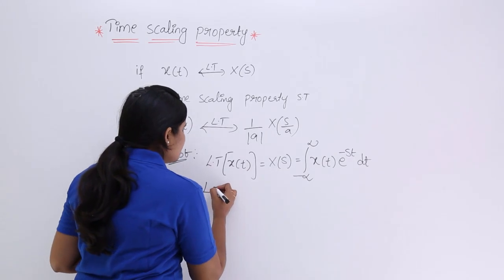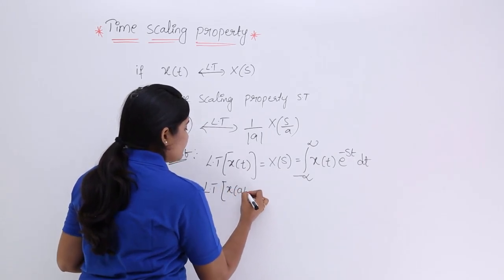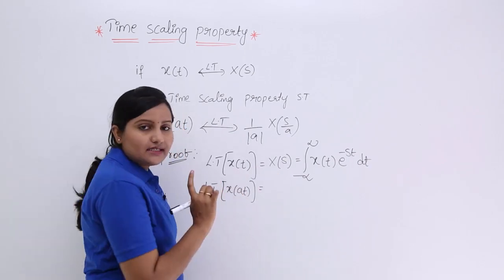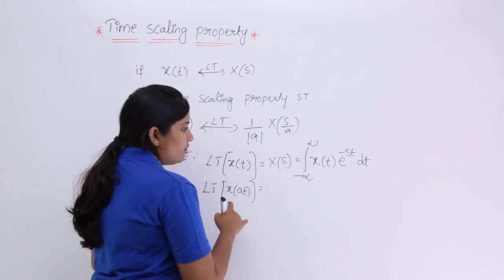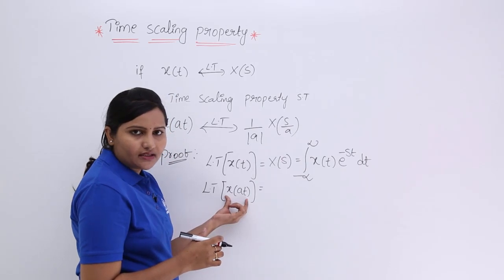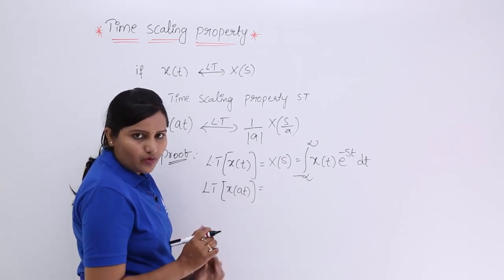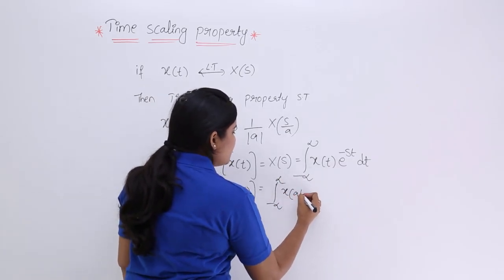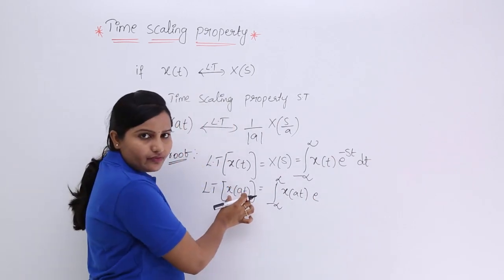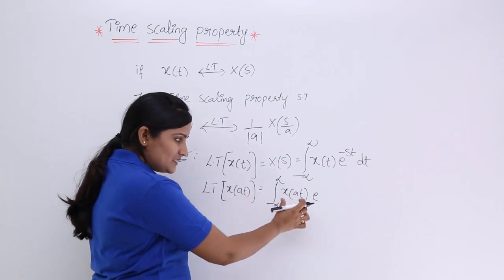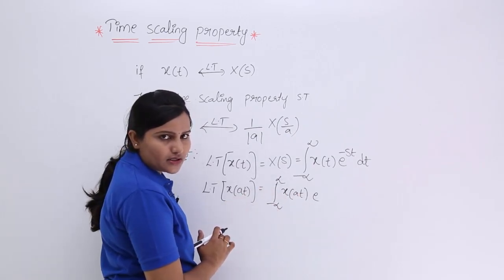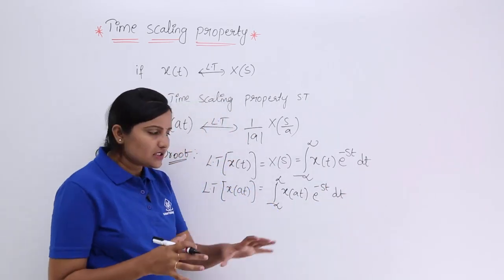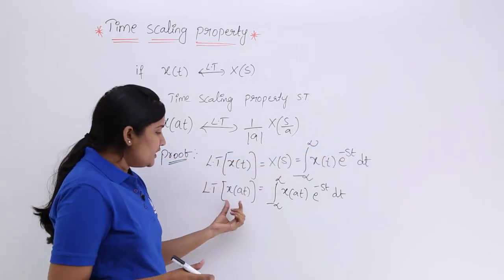We do not want the Laplace transform of x(t); we need to prove the Laplace transform of x(at). So I am going to consider the Laplace transform of x(at) — the time-scaled version of x(t). In the standard equation, wherever x(t) appears, replace it with x(at). So the equation becomes the integral from minus infinity to infinity of x(at) · e^(−st) dt.